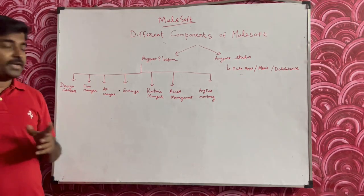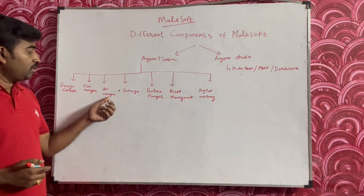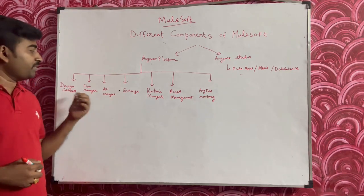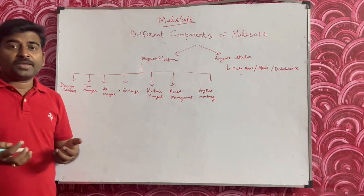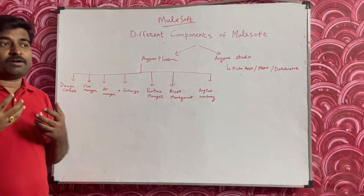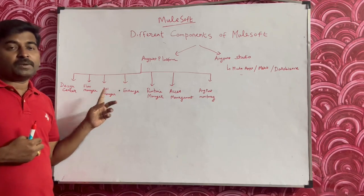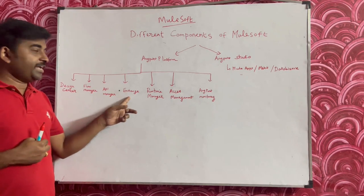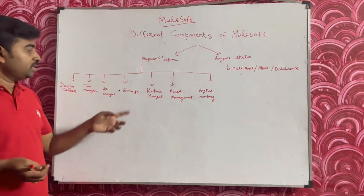API Manager is where you create and manage your APIs. For example, once you have an API specification, you can create an API on top of it. When someone calls your API and you want to apply a policy — such as enforcing security or rate limiting — the policy creation and configuration is done from API Manager.